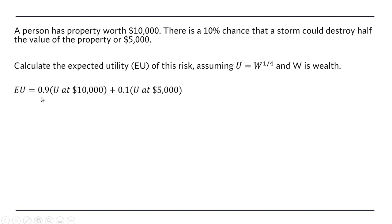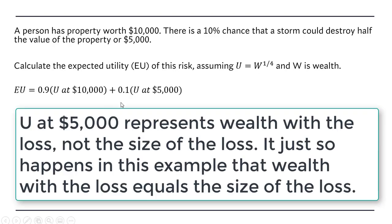So the expected utility: there's going to be a 90% chance that there will not be a storm and you'll have your property intact, still worth $10,000. So we're going to evaluate the utility function at $10,000 and multiply it by 0.9. On the other hand, there is a 10% chance that half your property will be destroyed, leaving you with only $5,000. Your utility at $5,000 will be calculated by plugging $5,000 into this utility function and multiplying it by 0.1.